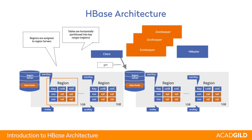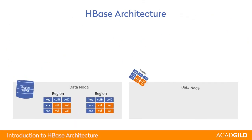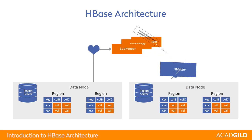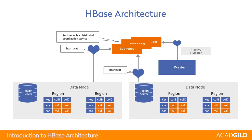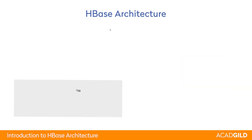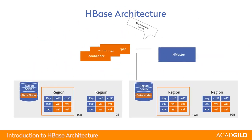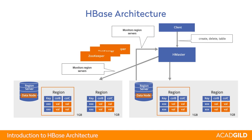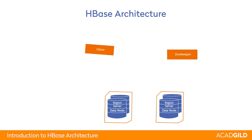The client can read from the region server for any quantity of data and any key they are looking for. The regions are horizontal subsets of the table stored in the region servers and sorted according to the keys. Every region server sends its heartbeat to the ZooKeeper and so does the HMaster. ZooKeeper maintains which among them are active or inactive. You may have multiple HMasters so that if one fails, it does not affect the downtime of the cluster. HMaster is responsible for creating and deleting tables and other administrative tasks, and the client connects to the HMaster.